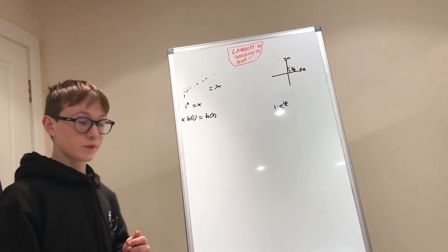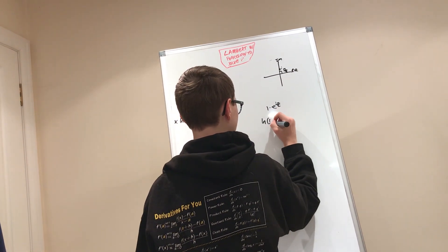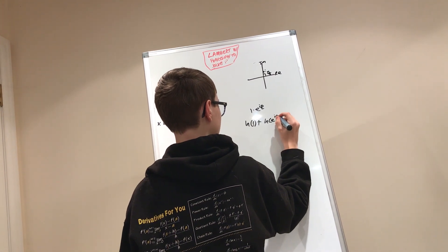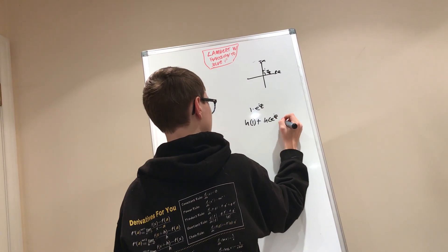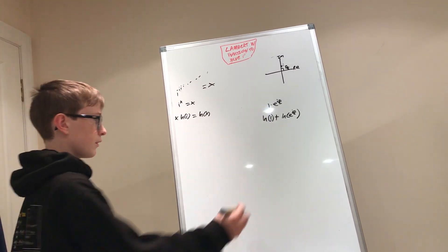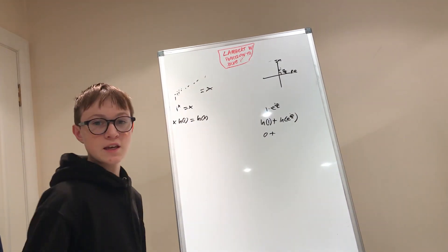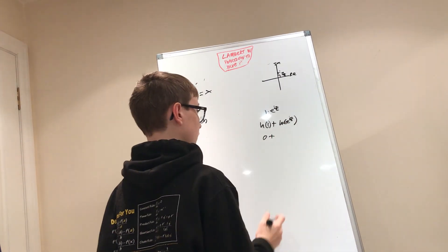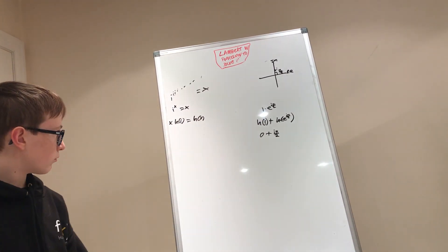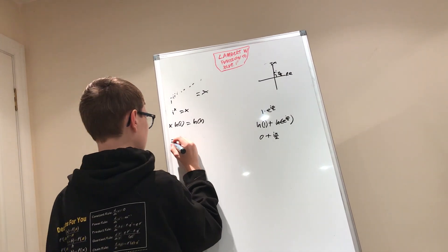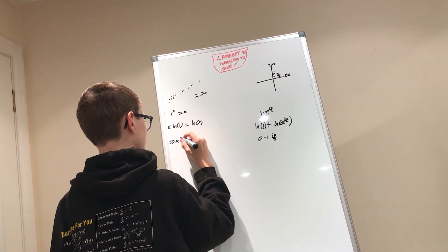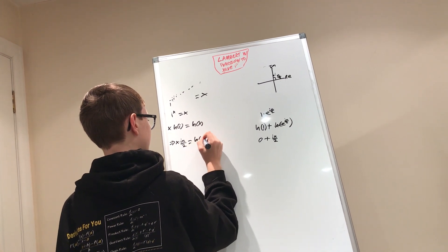So to take the natural log of this, it's the same as the natural log of one plus the natural log of e to the power of i·pi over two. The natural log of one is just zero, and the ln and the e will just cancel, so we're left with i·pi over two. So what we're saying is X times i·pi over two equals the natural log of X.